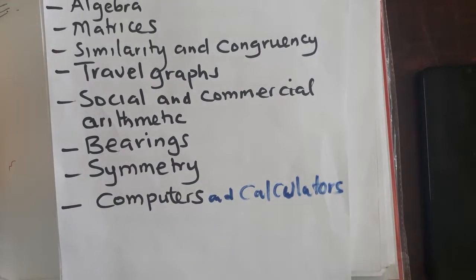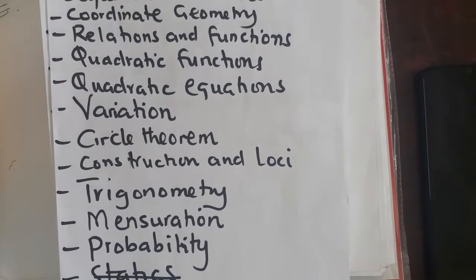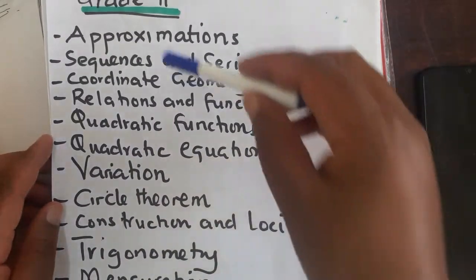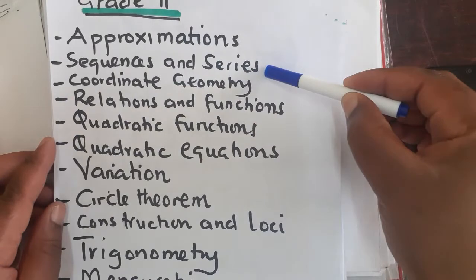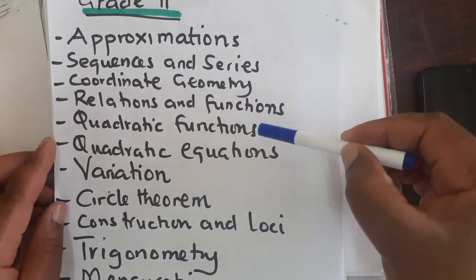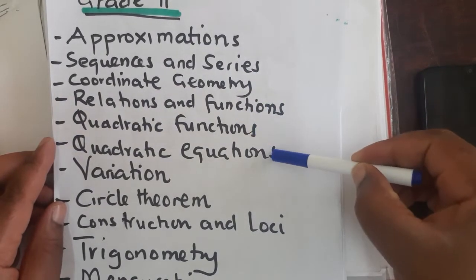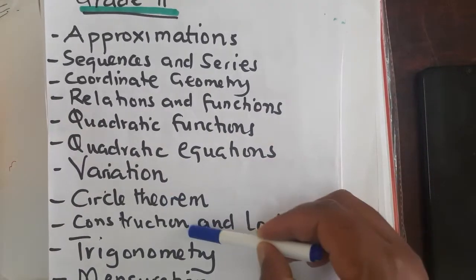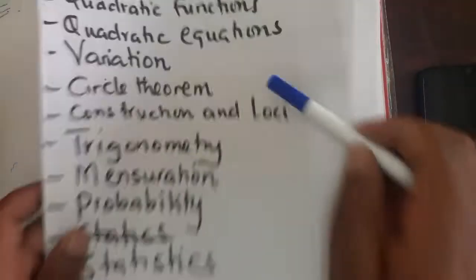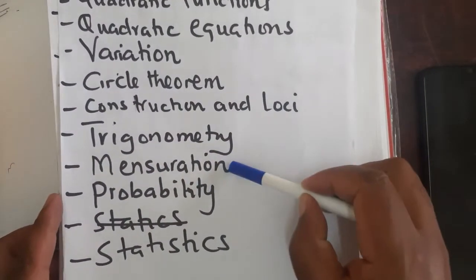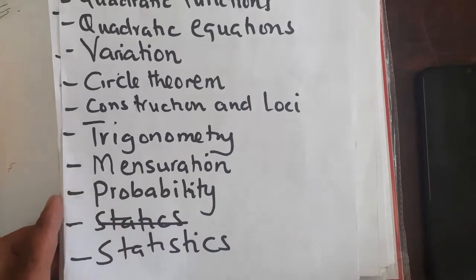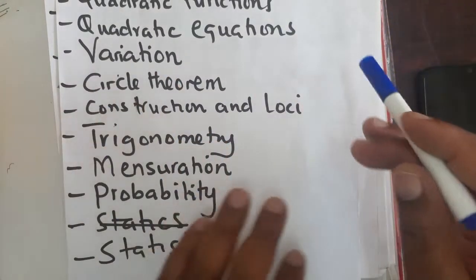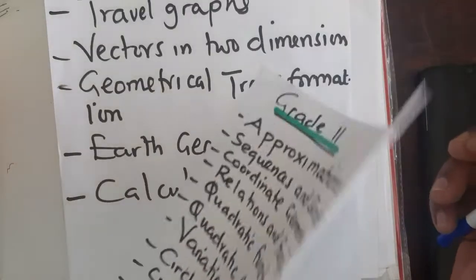Once you are done with that, you go to grade 11. In grade 11, we have the following topics: approximation, sequence and series, coordinate geometry, relations and functions, quadratic functions, quadratic equations, variation, circle theorem, construction and loci. Then we have trigonometry, mensuration, probability as well as statistics. Once you've covered this, it means you have covered fully all the grade 11 topics.